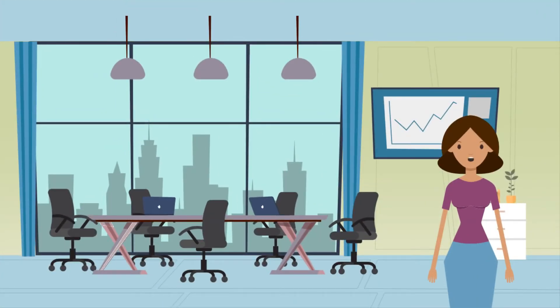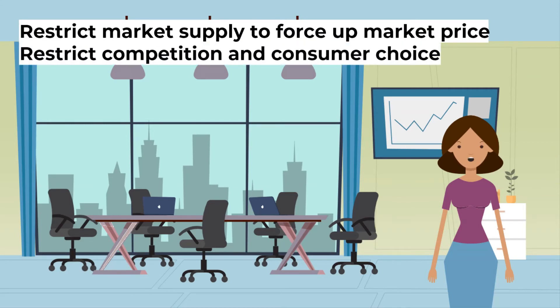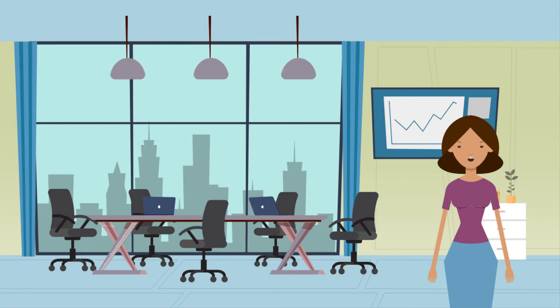There are many problems with monopoly power. A monopoly may abuse its market power to restrict market supply to force up market price, restrict competition and consumer choice, cut product quality to save costs. In addition, a monopoly may be poorly managed and inefficient because it does not face any competition. Governments may have to use resources to investigate and punish abuses of market power.